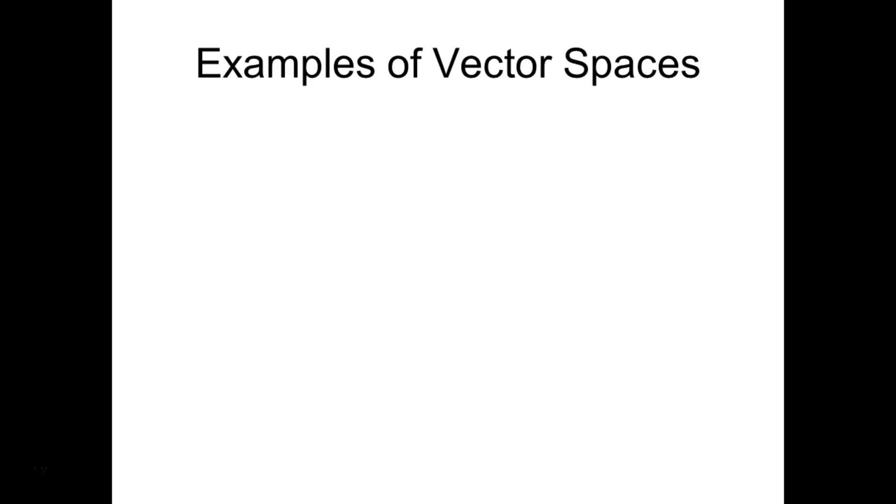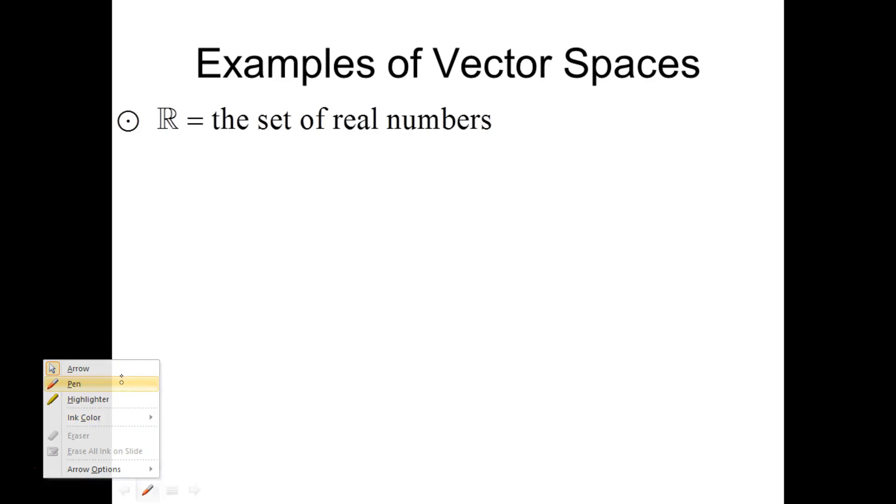This is part two to lecture five, where we look at some examples of vector spaces. The easy example of a vector space is the set of real numbers. So when I say vector space, what I want you to think of is, remember how we said there was a set V, that's the set of vectors, and a set F, which is the set of scalars.